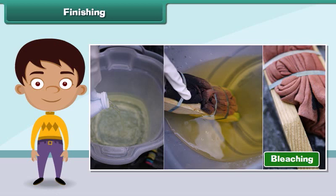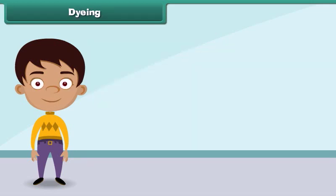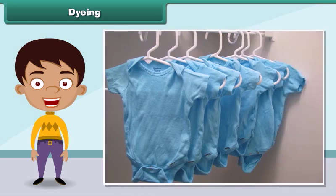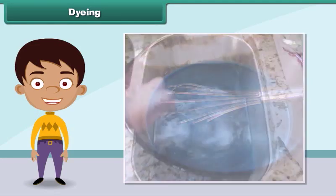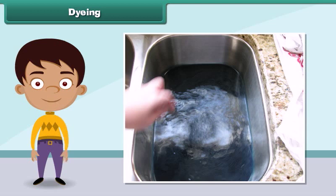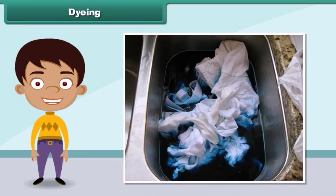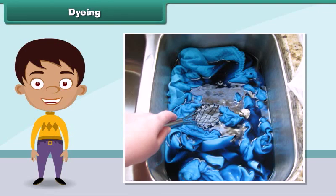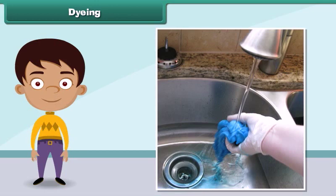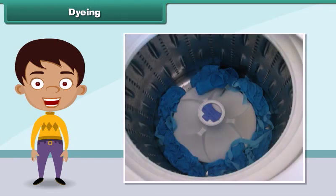Dyeing a fabric means giving a new color to the fabric. To dye a fabric, first a solution of dye and salt in warm water is prepared. Next, the fabric is dipped in the solution. Then the fabric is removed from the solution after an hour and washed. Finally, the fabric is dried.